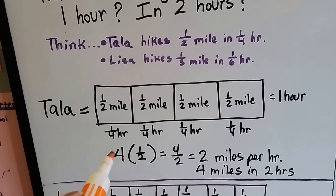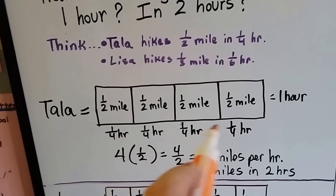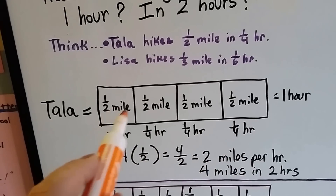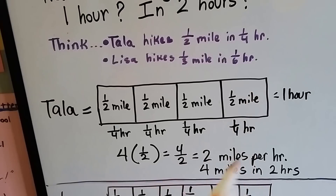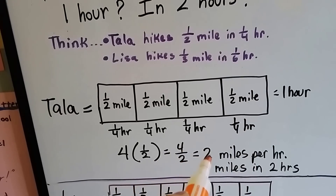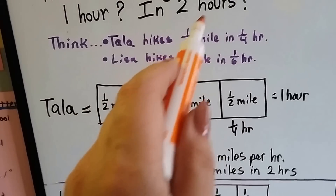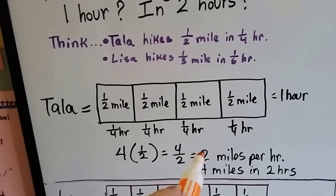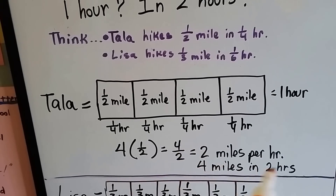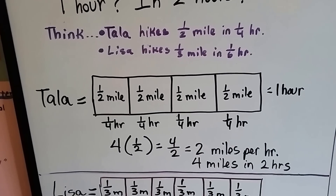We could also do four times a half because we broke the hour into fourths. Four times that half gives us four halves, which simplifies to two. In two hours, we just multiply the two miles by two and get four miles in two hours.